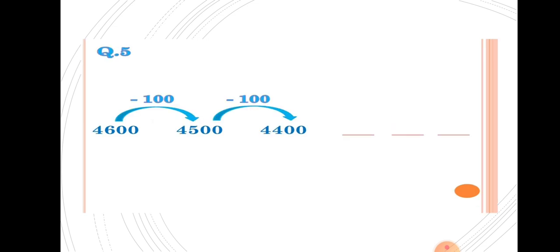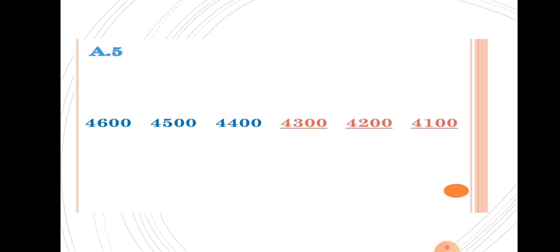Next example: 4600, 4500, 4400. From 4600 to 4500, decreased by 100. We have to subtract 100 to get the next number. So 4400 minus 100 equals 4300. Then 4300 minus 100 equals 4200. Then 4200 minus 100 equals 4100. Yes, very correct.